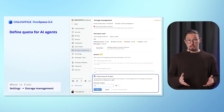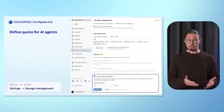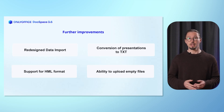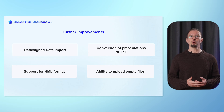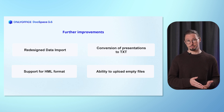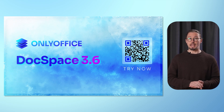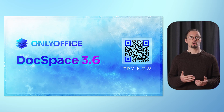Beyond the AI settings, you can also set storage quotas for AI agents, allowing you to manage memory consumption within your DocSpace effectively. Here are even more exciting improvements across the platform alongside the AI agents: redesigned data import for a smoother and more intuitive experience, support for HML format and the ability to convert presentations to TXT, and the option to upload empty files for added flexibility. Transform your workflow today with DocSpace 3.6 — simply scan the QR code to create your free cloud account and get started.